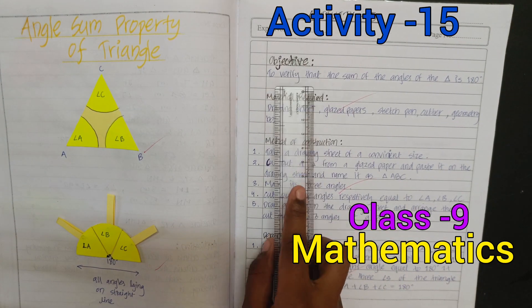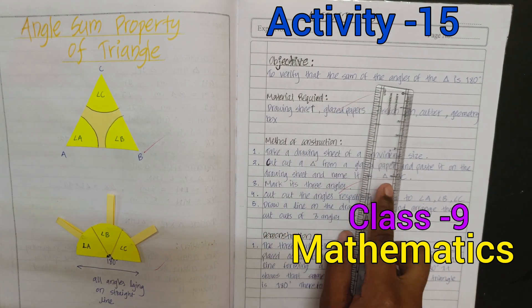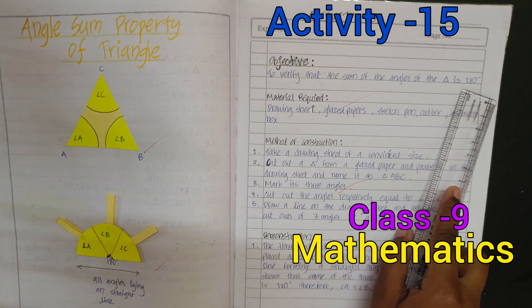Activity number 15. Its objective is to verify that the sum of the angles of a triangle is 180 degrees.